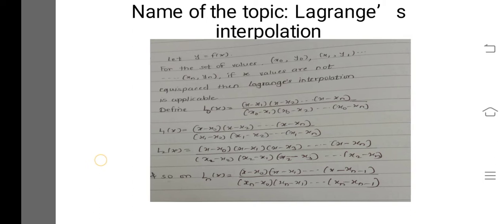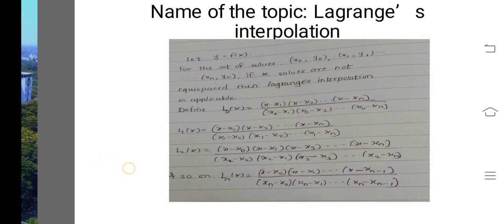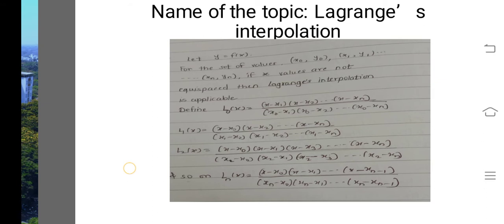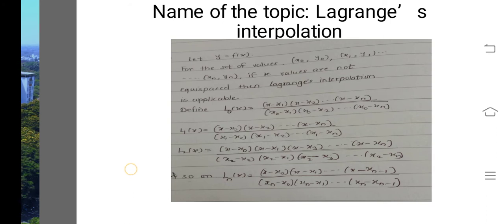For L2(x), we do not include the term (x − x2). So L2(x) equals the product (x − x0)(x − x1)(x − x3)···(x − xn) divided by (x2 − x0)(x2 − x1)(x2 − x3)···(x2 − xn), and so on.